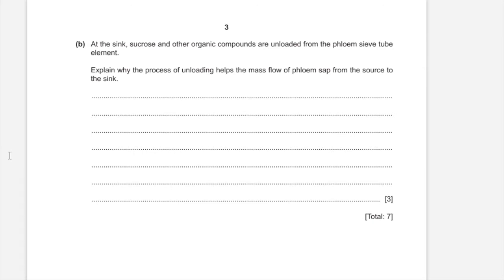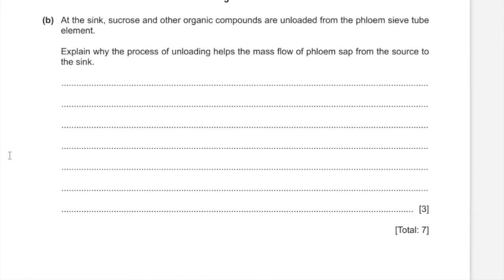At the sink, sucrose and other organic compounds are unloaded from the phloem sieve tube element. The mass flow of phloem sap is caused by a difference in hydrostatic pressure. This gradient is created between the source and the sink. When sucrose and other organic compounds are unloaded from the sink, water is also removed, decreasing the hydrostatic pressure at the sink. This means the hydrostatic pressure at the source becomes greater than at the sink, and therefore a gradient is created which causes mass flow.